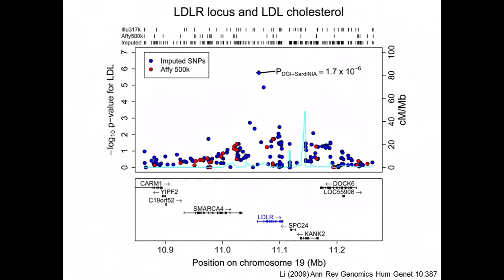Here's an example in a region of the genome showing evidence of association for LDL cholesterol near the LDL receptor gene. The variants shown in red were directly genotyped — none showed very strong evidence of association. The variants shown in blue were imputed by comparison to a better reference panel, and you can see that some of those imputed variants showed stronger evidence of association. This increased coverage of the genome can allow signals to be identified that might otherwise have been missed.